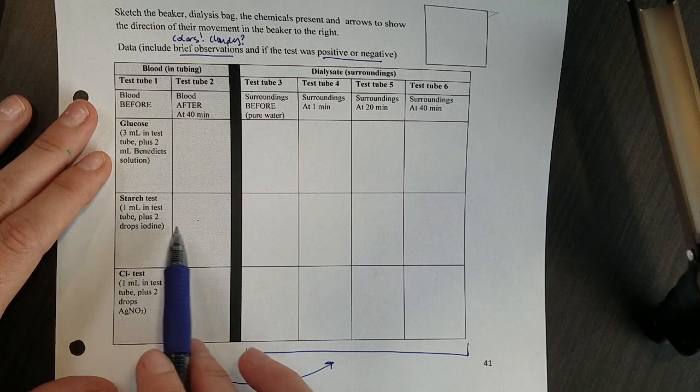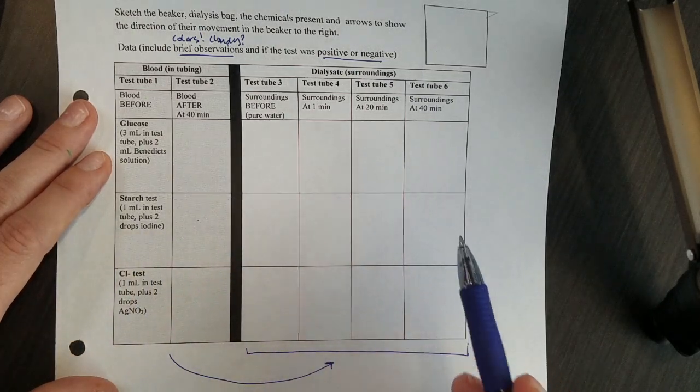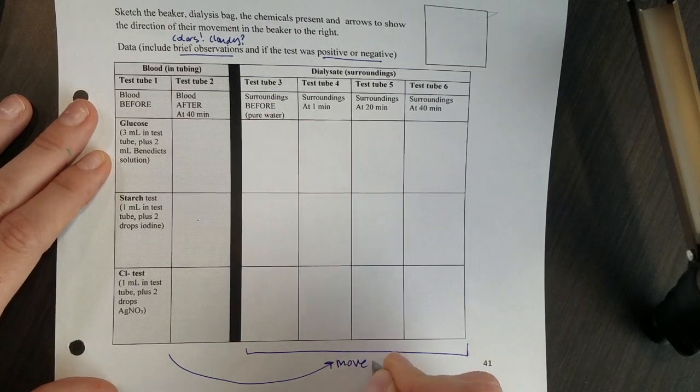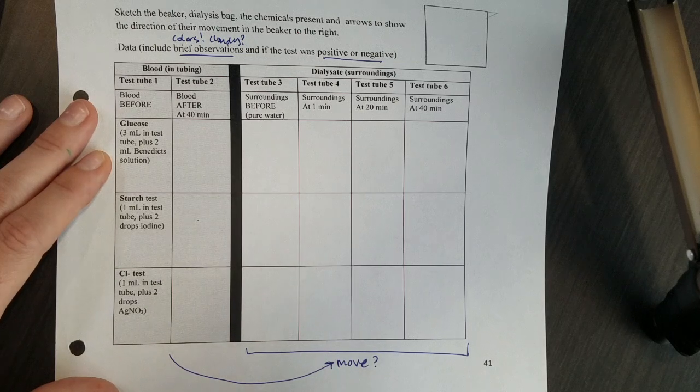If I have starch here and here that doesn't mean any movement happened. But if I have starch in the blood and then it shows up outside the blood, that's what I'm looking for. Do these solutes move out into the dialysate? Do they diffuse? That's the point.